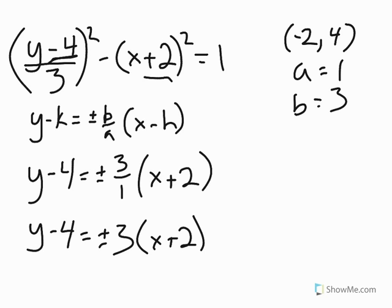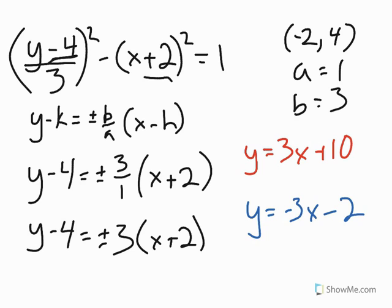Or if you wanted to, you could simplify and get your terms in y equals mx plus b form, or slope-intercept form. Which, if you were to go through the steps to simplify it, you would get the two equations as y equals 3x plus 10, and y equals negative 3x minus 2.